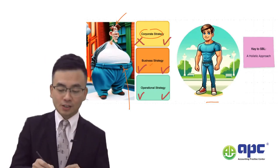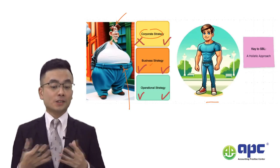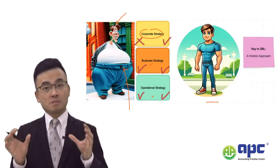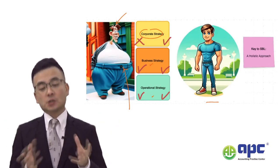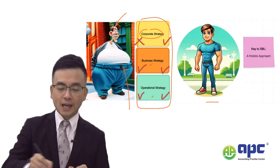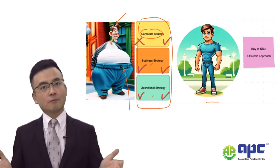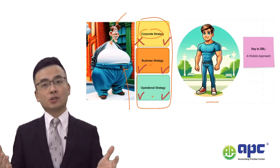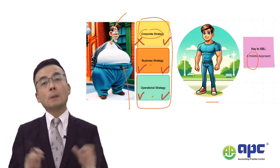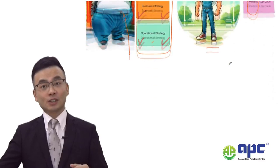In terms of business strategy — how we compete with our competitors — it seems to be quite nice. And the operational strategy, which means making sure we implement things properly, is quite nice as well. But we need to make sure that all three key elements are looking nice, not just the second and third, but also the first element. This is why we need to take a holistic approach by considering all the bits and pieces together when setting up strategy for the business.